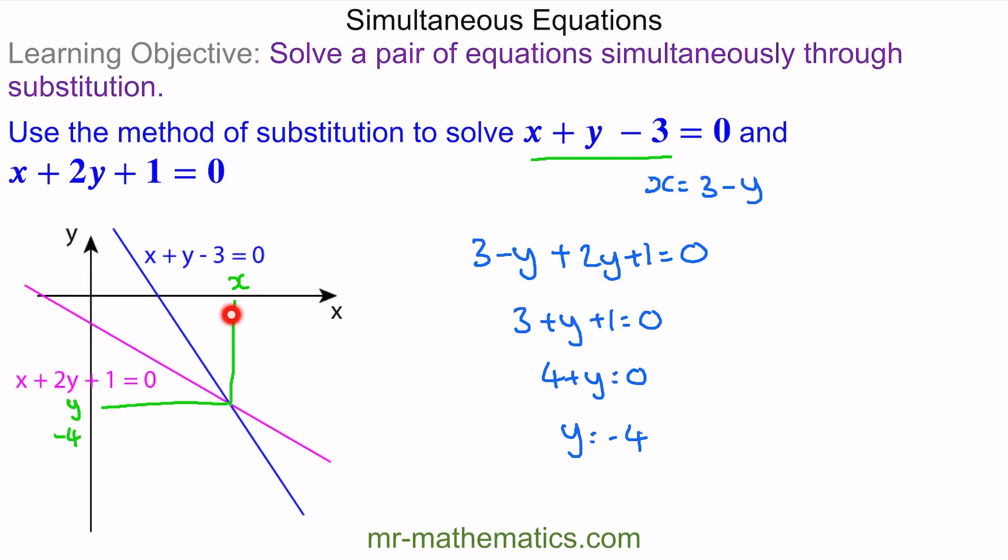Now we can work out the x value by substituting this value of y back into one of the equations. I'm going to choose this equation. So x plus y, which is negative 4, minus 3 is 0. So x equals 7. So now there are two solutions: y is negative 4 and x is 7.